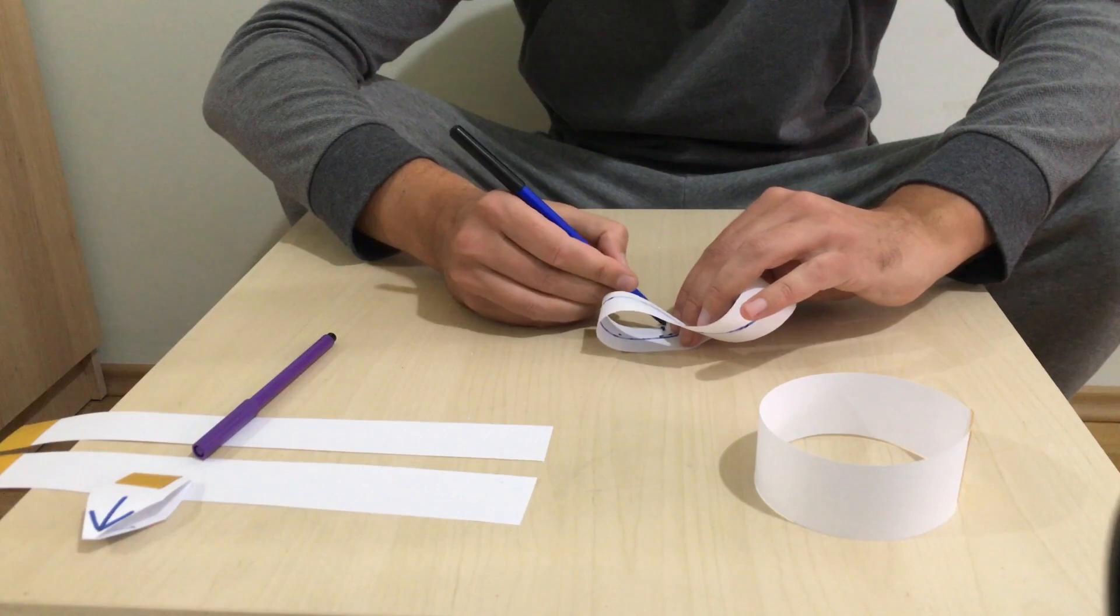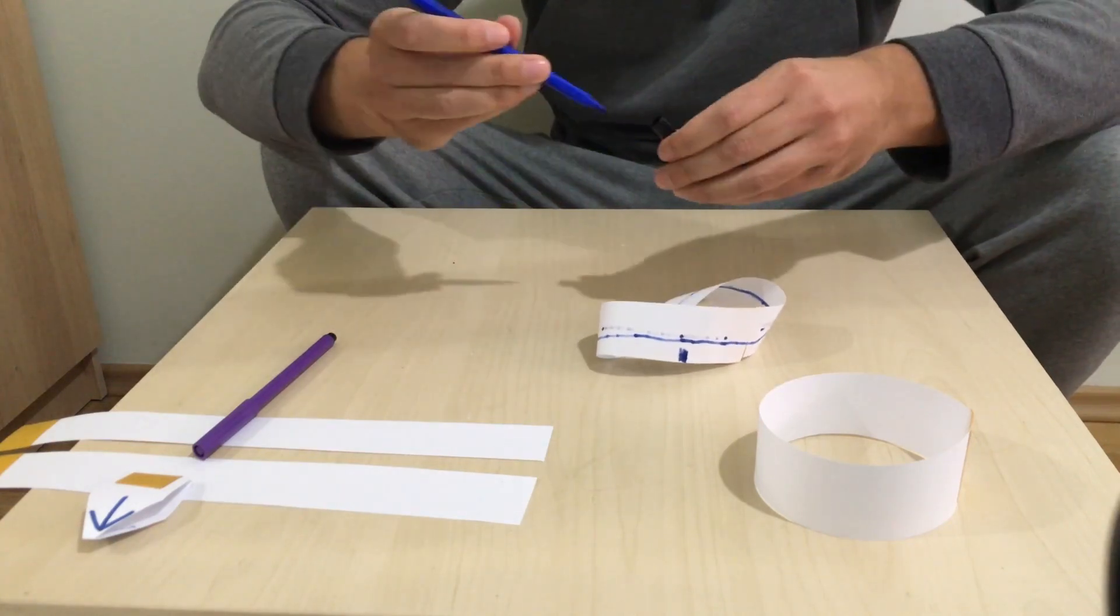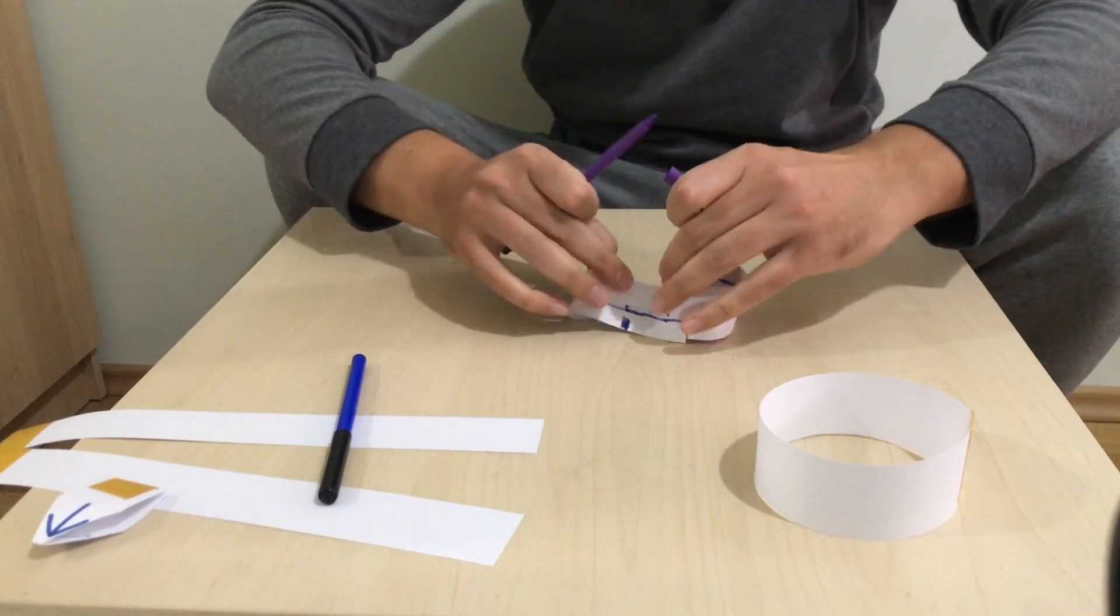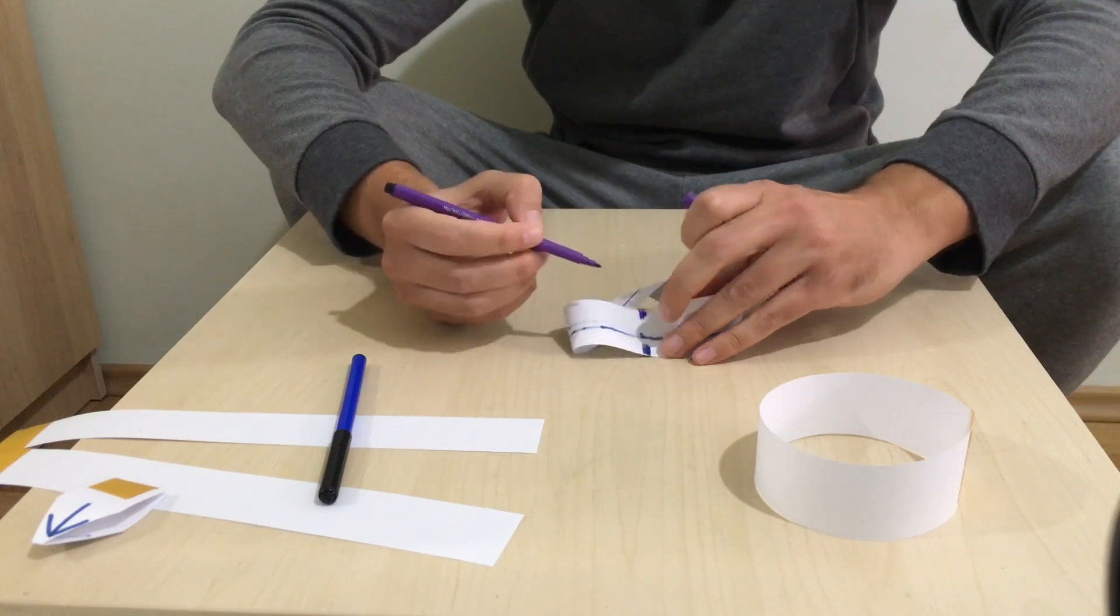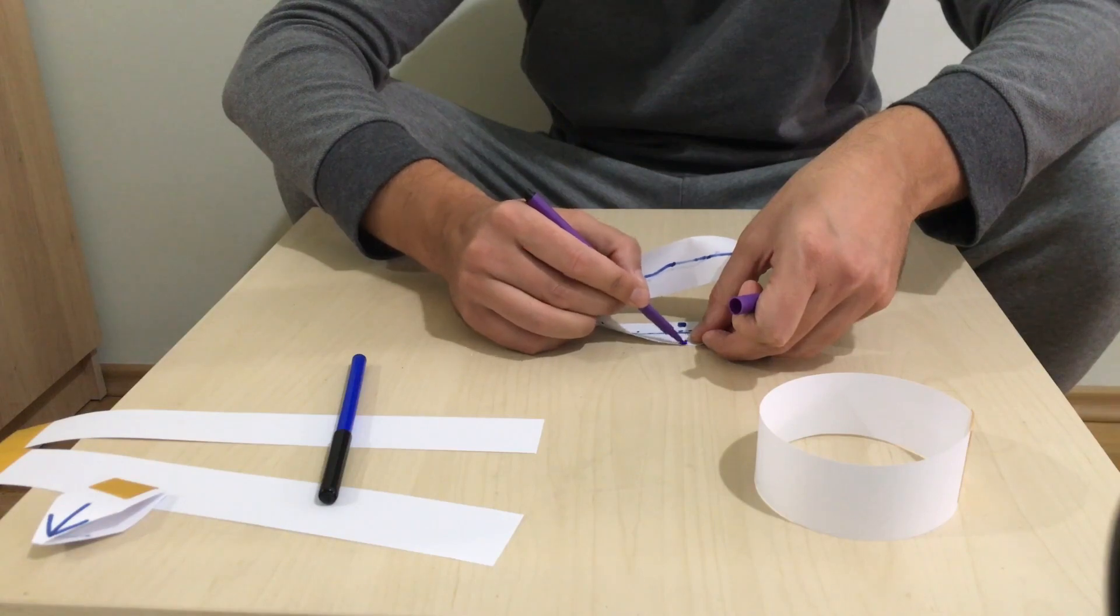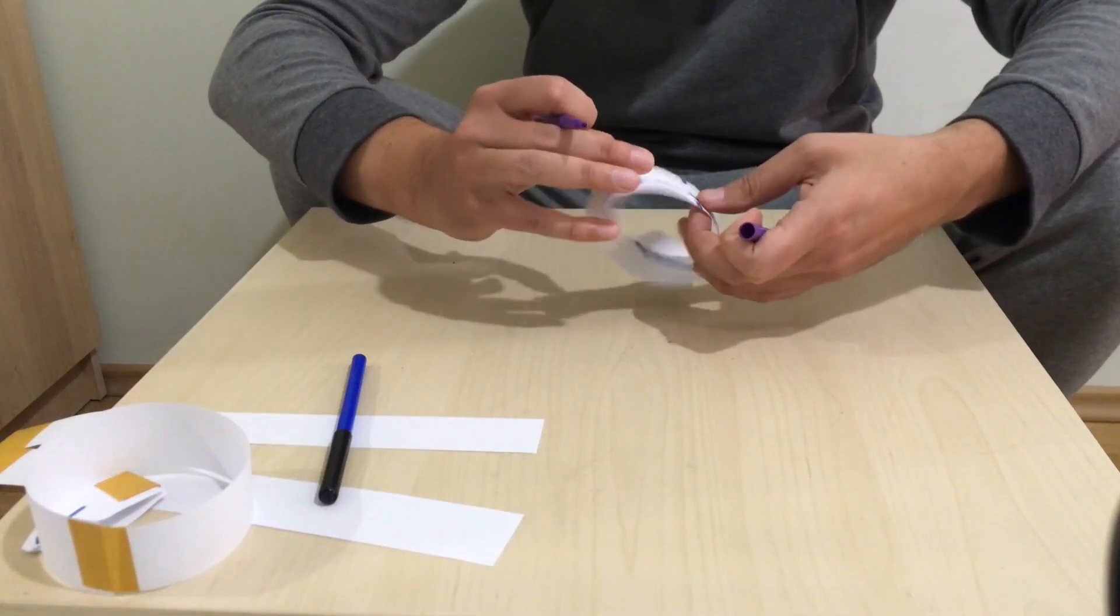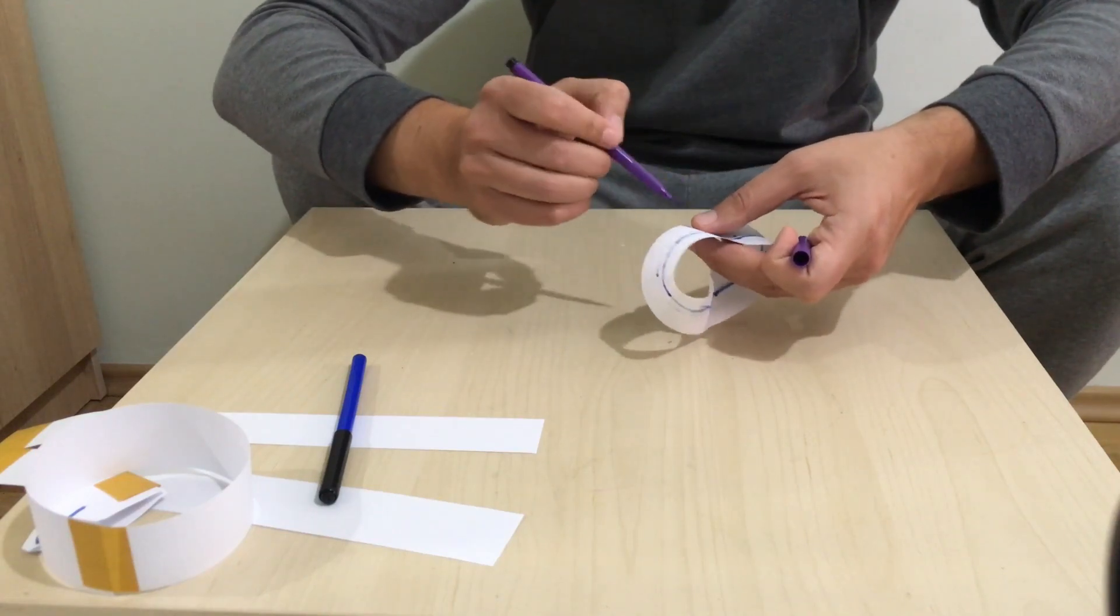I'll mark it with blue on this edge and on the other side of the edge. On this side I'll mark with purple this edge and this edge, and I'll show you that it's only one edge. I'll trace the edge from the purple point up to the blue point.